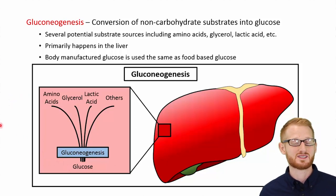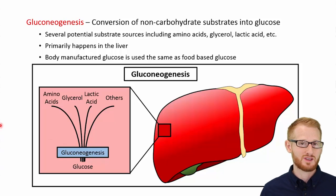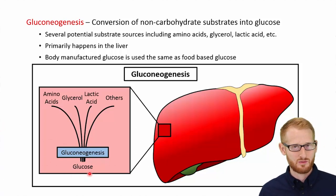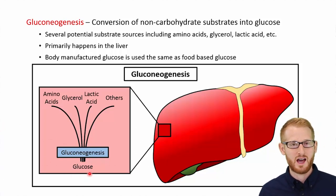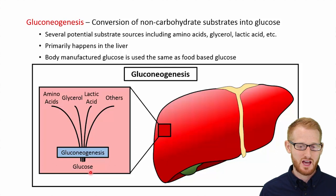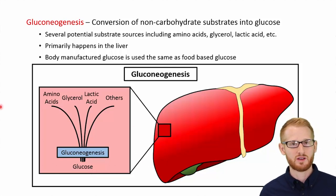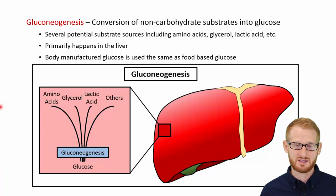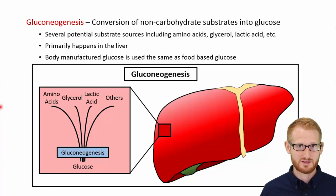When our bodies don't have enough glucose around, they can use other things to make glucose — which is what will eventually happen on a low-carbohydrate diet as the body ramps up its gluconeogenesis. This generally happens in the liver, which is the most active site for gluconeogenesis, though it can happen in other tissues as well.